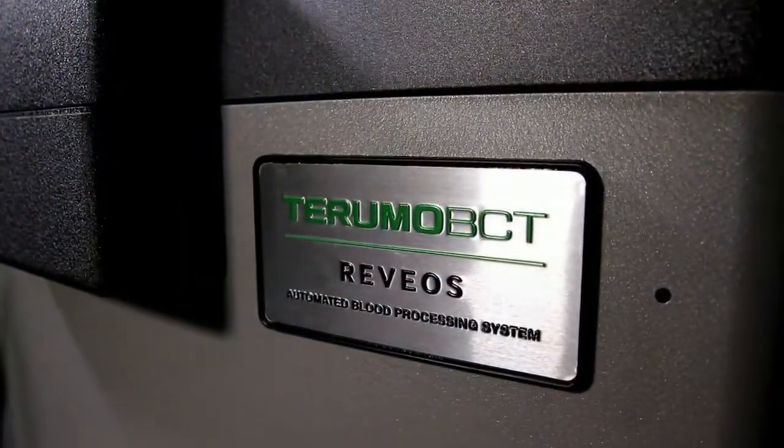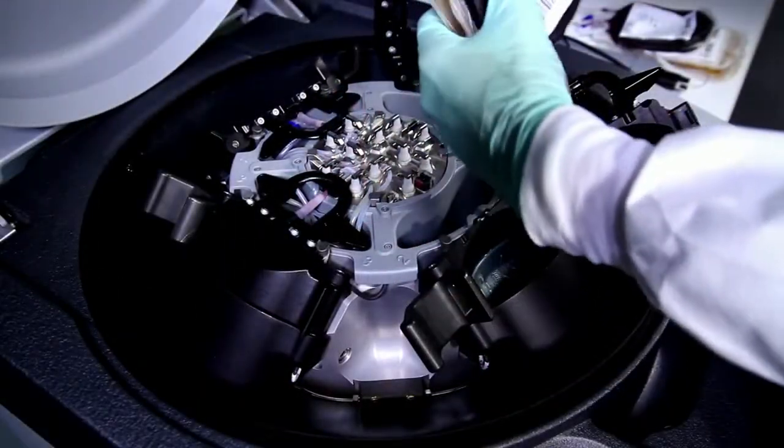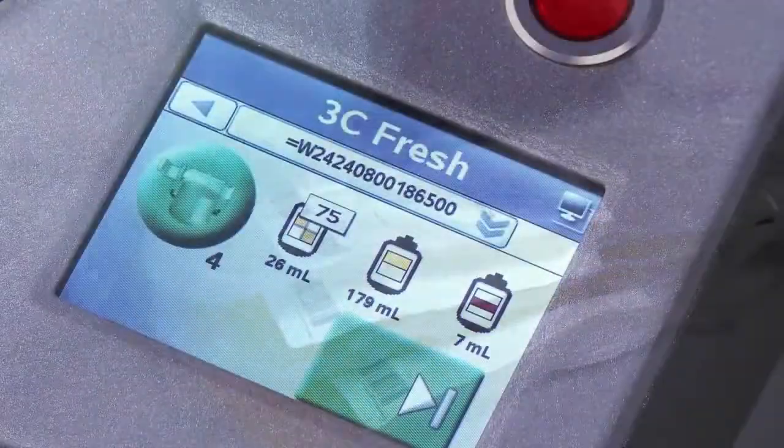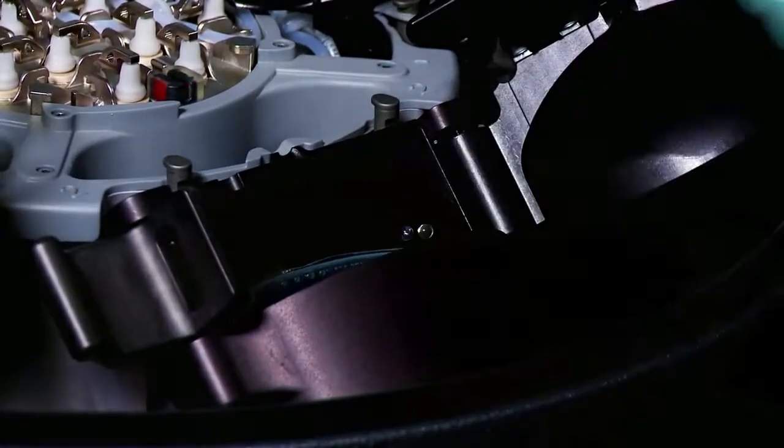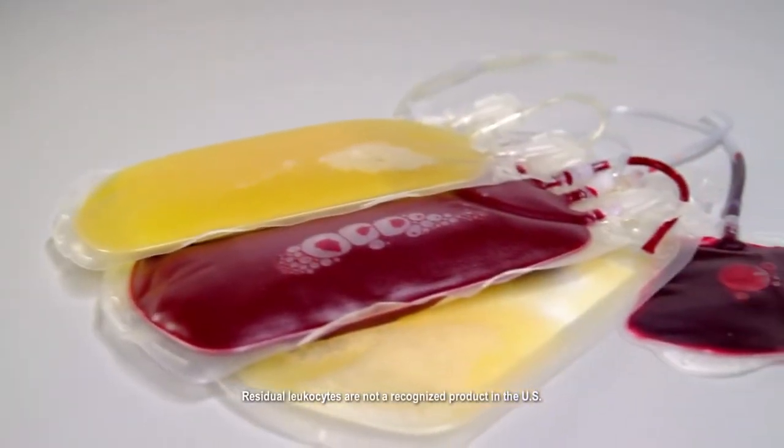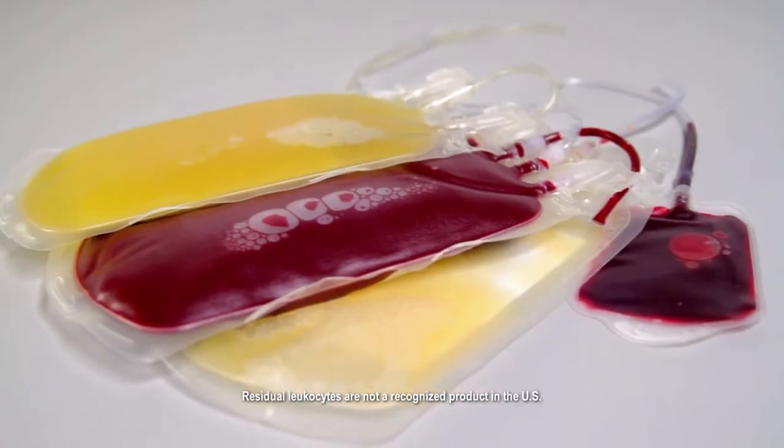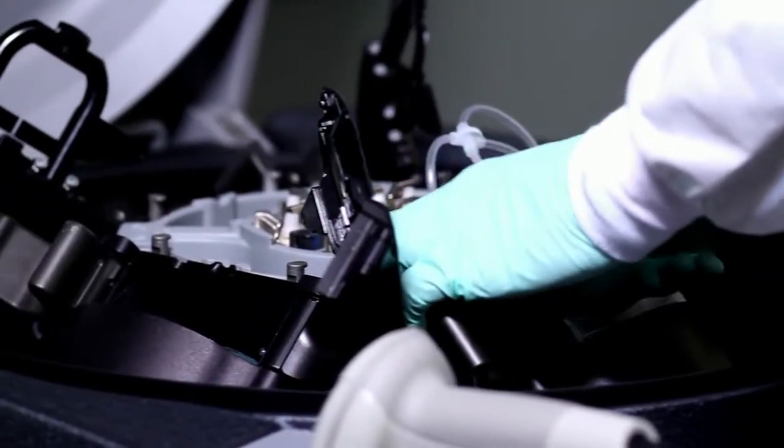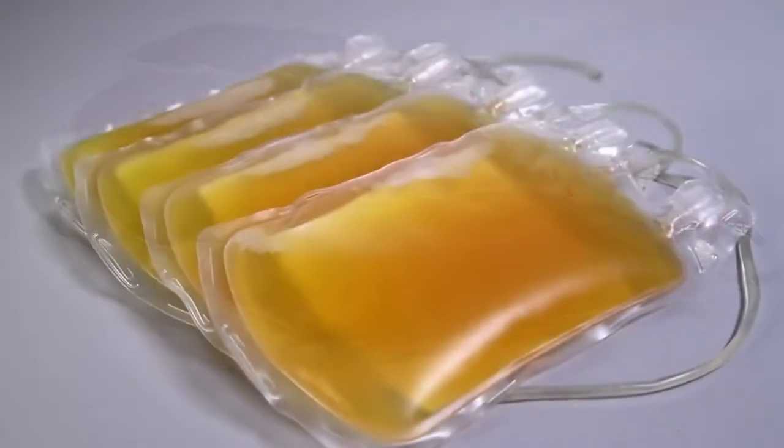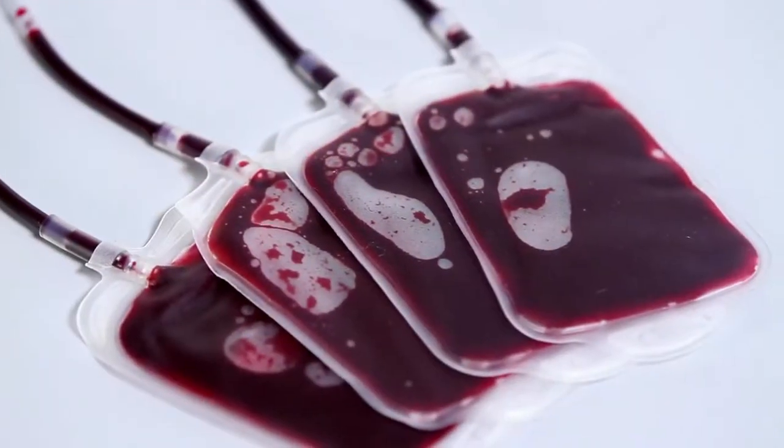The Revios system uses a single run to separate blood into its components. The final products are based on the procedure selected. The three-component or 3C procedure creates plasma, red blood cells, platelets and a residual leukocyte unit. The two-component or 2C procedure creates red blood cells, plasma and a residual leukocyte.